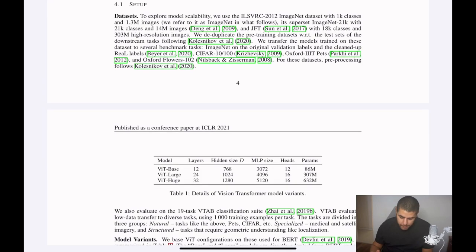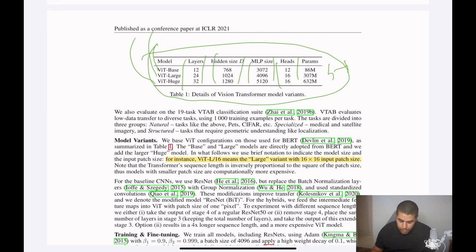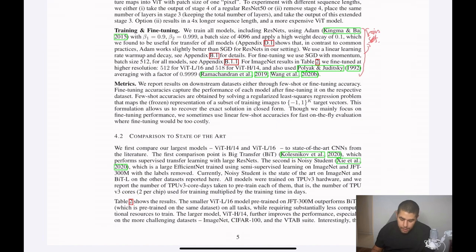And after that, we turn into experiment section. So experiments are conducted with three models. We can see here. This is just like BERT. We have base variant, large variant, and huge variants. These are the number of layers, the hidden size, multilayer perceptron size, number of attention heads, and the number of parameters they have. According to those, they will conduct experiments. And the model variants are explained here. When they say ViT-L/16, it means that it is a large model with patch size of 16. Here, we can see some training setups. Which optimizer used with which values, which learning rate, etc.